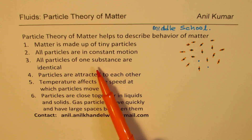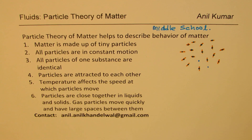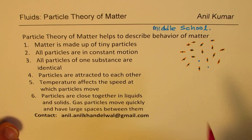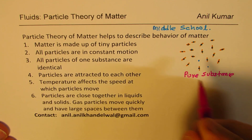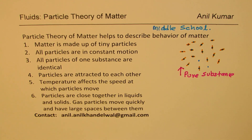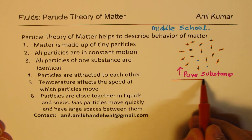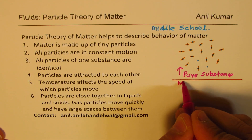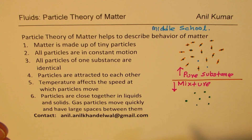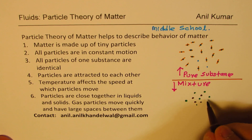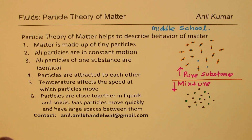Point three: all particles of one substance are identical. So if I have particles of exactly the same type, then it is a pure substance — that is what I have drawn here. Now if I have an impure substance, or a substance which has two or more types — a mixture — then in a mixture there could be particles of two different types or more. So we could have particles of one type and particles of another type, and that forms a mixture. In a mixture, we have two or more types of particles.